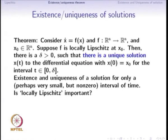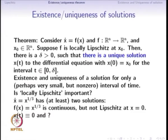We can ask: is locally Lipschitz really crucial for existence and uniqueness? After all, we have spent time analyzing the significance of locally Lipschitz and its relation to differentiability and continuity. To illustrate the importance, we will see that the differential equation x-dot = x^(1/3) has at least two solutions, because x^(1/3) is not locally Lipschitz at 0, so uniqueness is not guaranteed.